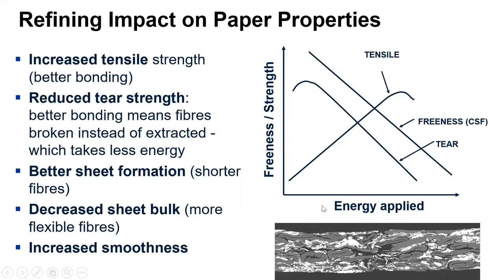The tensile strength goes up with refining because you have better bonding — it goes up because in-plane bonding improves. But the tear strength goes down. There is a little increase at the beginning, but then it goes down dramatically. One reason is that tear depends very highly on fiber length. If you make paper with nanocellulose or microcellulose, the tear strength is very poor — because the fibers or units are very small.